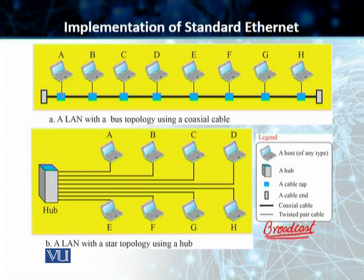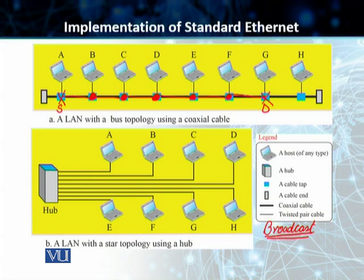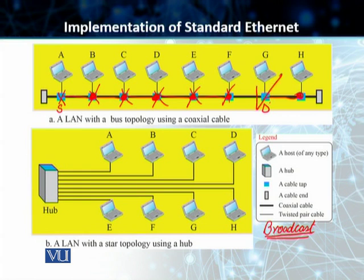For example, suppose station A needs to send something to G, so our source is A and our destination is G. A will send a unicast to G. In unicast transmission, stations B, C, D, E, F, G, and H — all stations on the bus (this is a bus topology) — will actually receive that frame. But all other stations will look at the unicast address in that frame and discard it. Station G, as the ultimate destination, will look at this address and accept the frame.